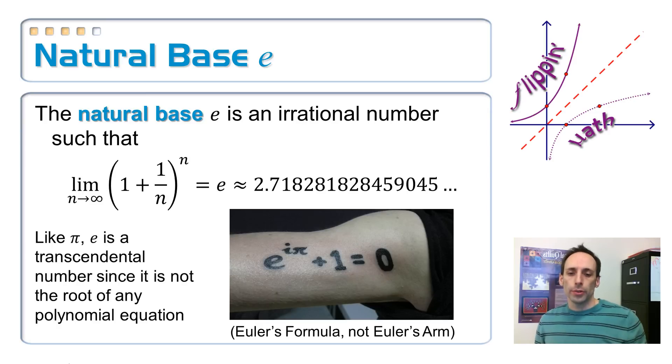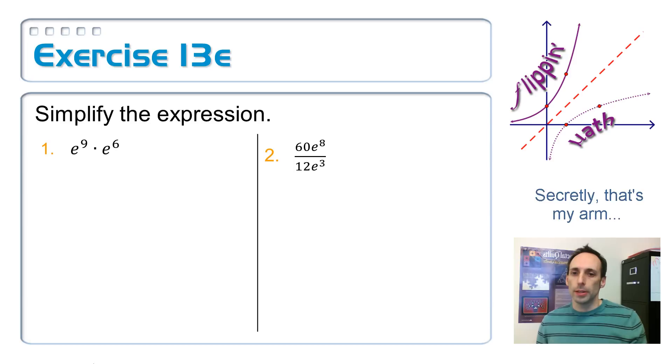So there's that tattoo I was telling you about, E to the I pi plus one is equal to zero. Go ahead, plug it into your calculator if you wanted to test it out. And people think that it's pretty sweet and cool, cool enough to tattoo yourself with, because it's a formula that has all of the fundamental mathematical constants in it. I think it's pretty cool, but I don't think I'm going to tattoo it to my body.